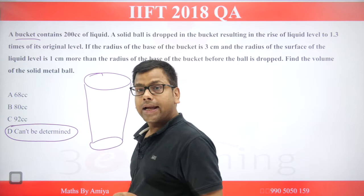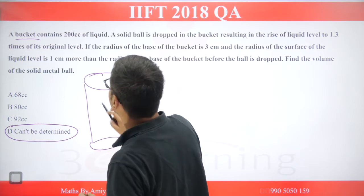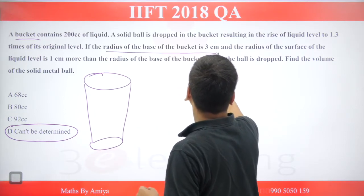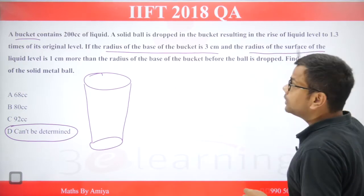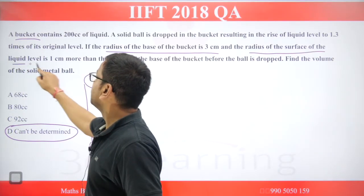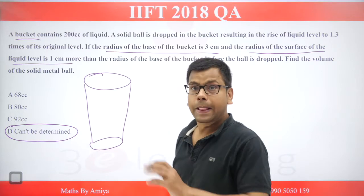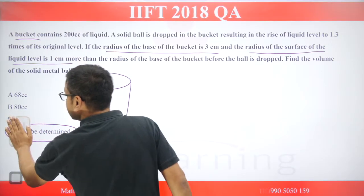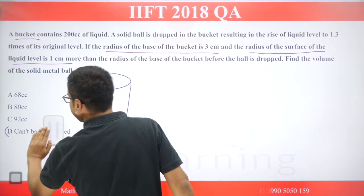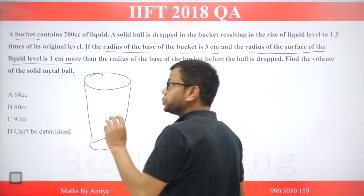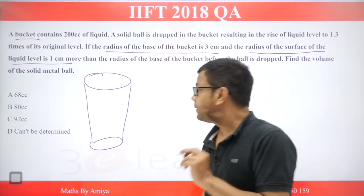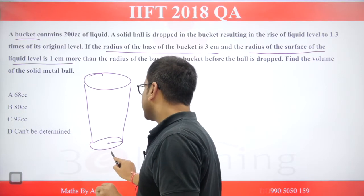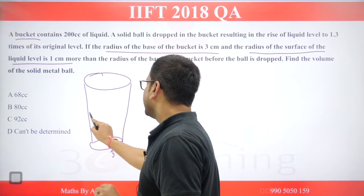Let's see — it is not cylindrical. The radius of the base of the bucket is 3 cm and the radius of the surface of the liquid is 1 cm more, meaning 4 cm. This is telling us the shape in the problem itself, so the answer is not 'cannot be determined.' The base radius is 3 cm, and here is the liquid surface.